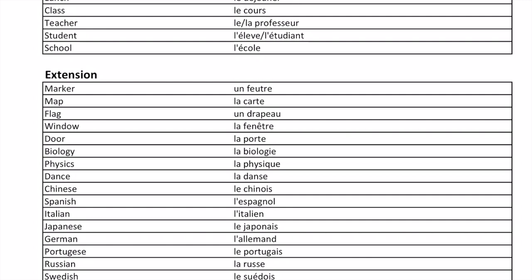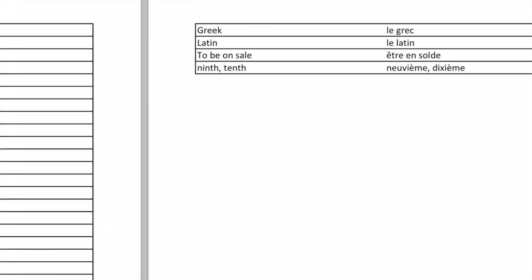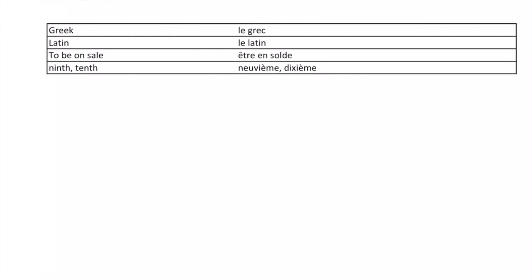Extension vocabulary: 'l'espagnol,' 'l'italien,' 'le japonais,' 'l'allemand,' 'le portugais,' 'la russe,' 'le suédois,' 'le grec,' 'le latin.' 'Être en solde.' Ordinal numbers: 'neuvième,' 'dixième.'